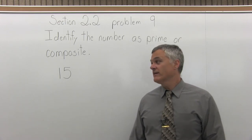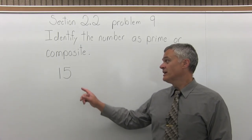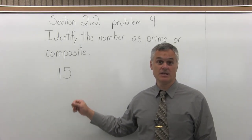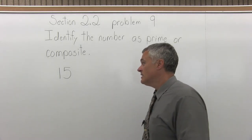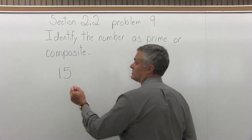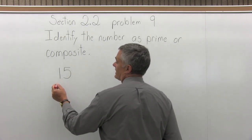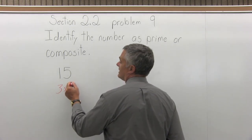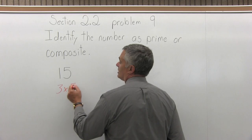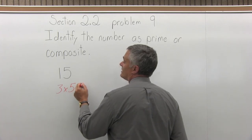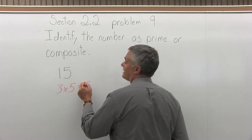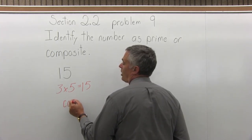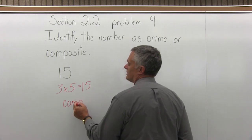So we have to find if there are any numbers besides 15 and 1 that divide into 15 evenly. And the answer is yes — we can divide in a 3 and also a 5. So you can make 15 by multiplying 3 times 5. That means that 15 is a composite number.